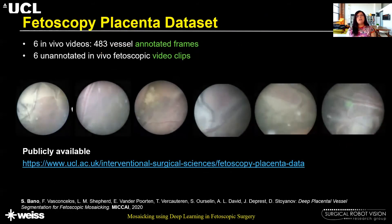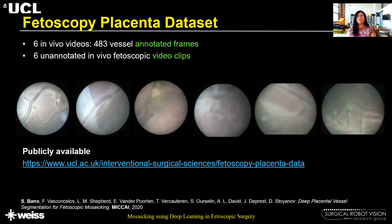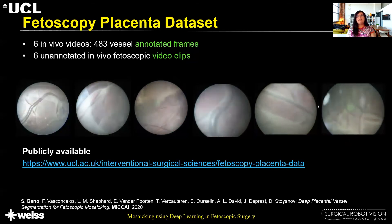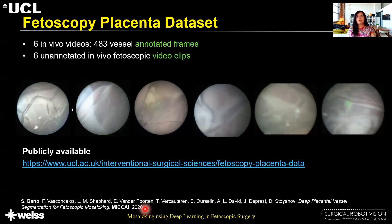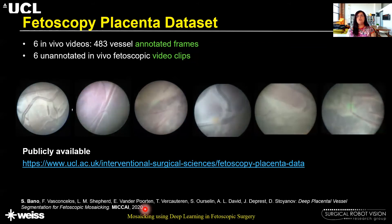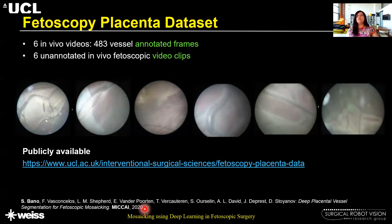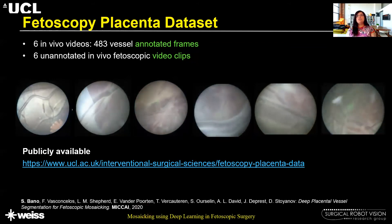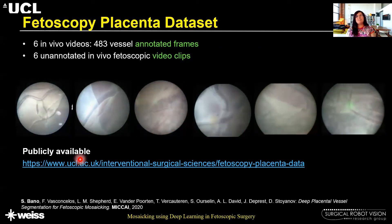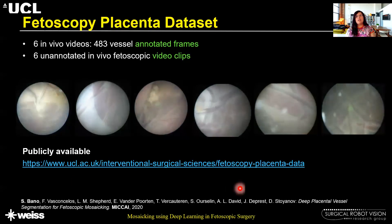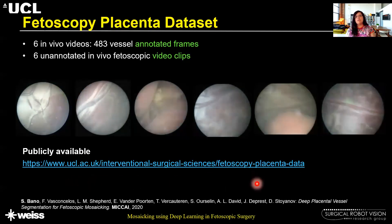The dataset used for validating segmentation and vessel registration contained six in vivo videos with about 483 vessel-annotated frames, and six unannotated in vivo video clips for validating the registration approach. This dataset, named the Fetoscopic Placenta Dataset, is available on our center's website.